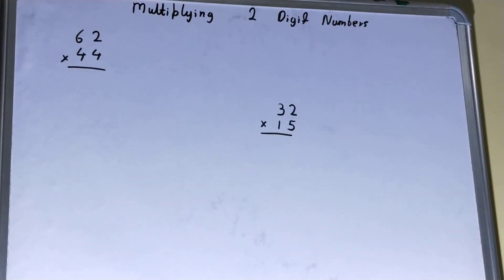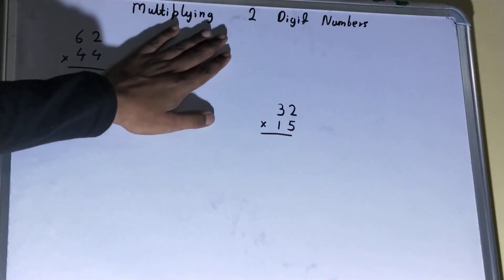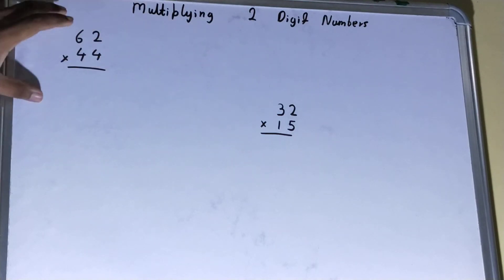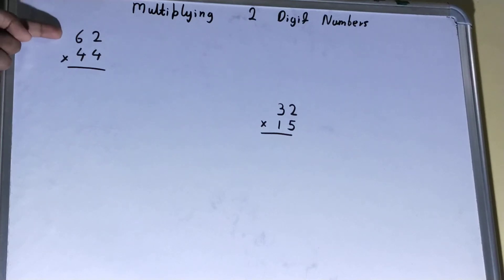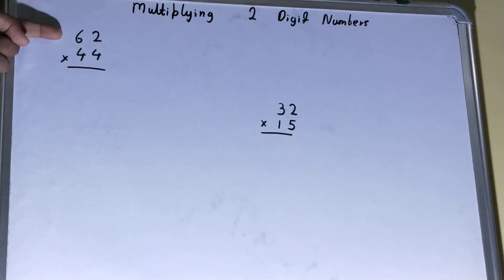Hello friends, in this video I'll be helping you with how to multiply two digit numbers. We have got two examples for you to make you understand the concept. Let's start with the first example: 62, a two digit number, multiplied by the two digit number 44.